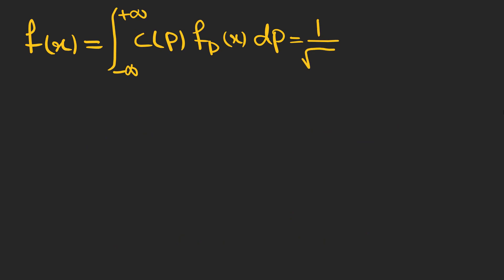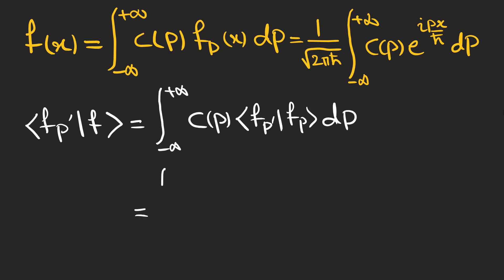These eigenfunctions are complete and we can write any function of x like f of x using this integral. To find the expansion coefficient we use the Fourier trick.